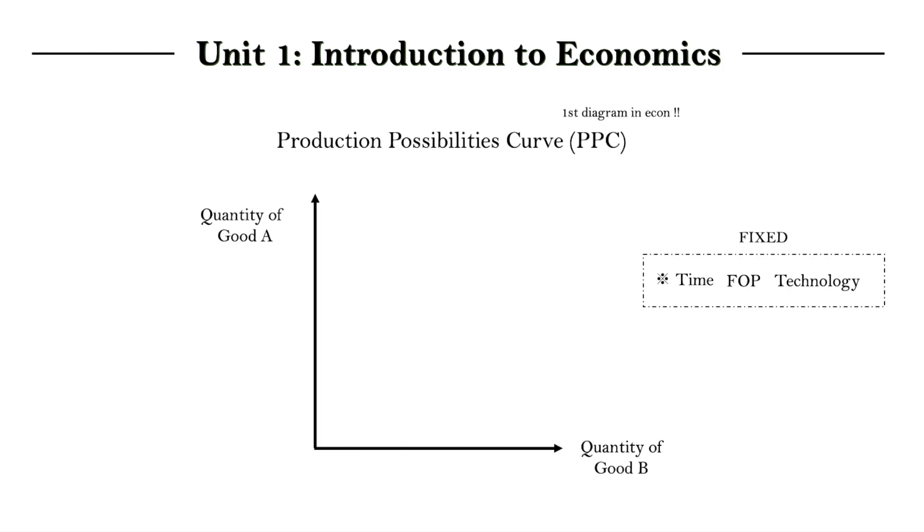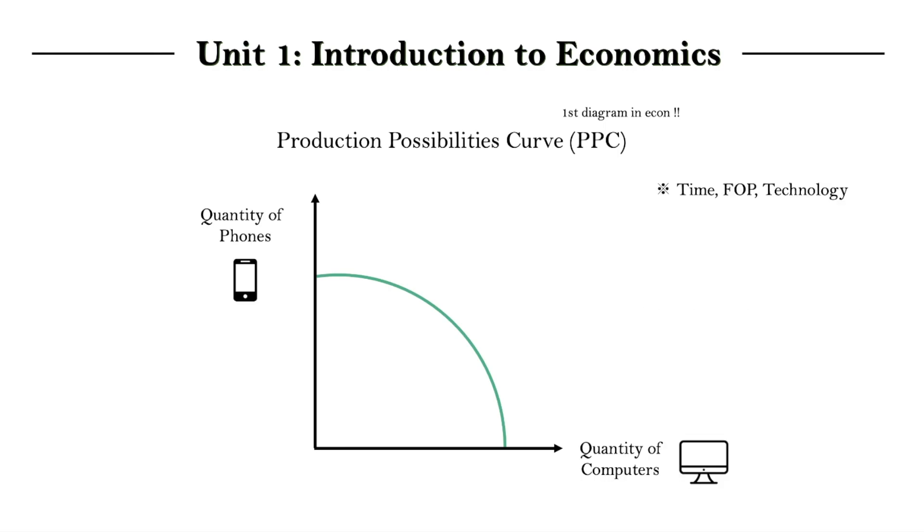Anyways, this is what the PPC looks like. It's just a rounded curve. And to best introduce the model, let's bring in a more concrete example and switch out goods A and B for phones and computers. And going back to our assumptions, these are the only two goods being produced in the economy, so this economy apparently only makes phones and computers.